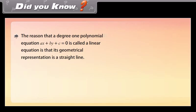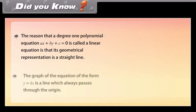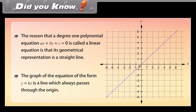A degree-1 polynomial equation AX plus BY plus C is equal to 0 is called a linear equation because its geometrical representation is a straight line. The graph of the equation of the form Y is equal to KX is a line which always passes through the origin.